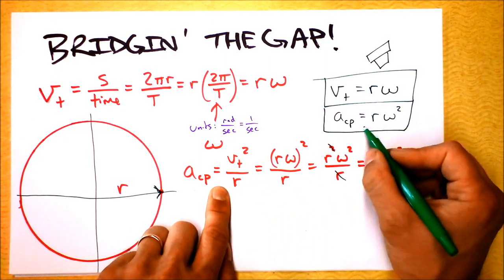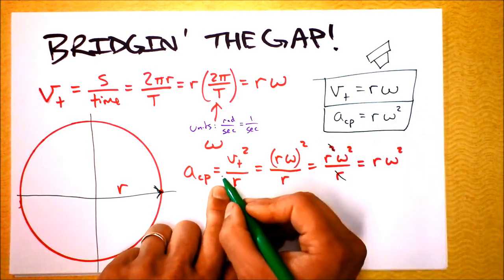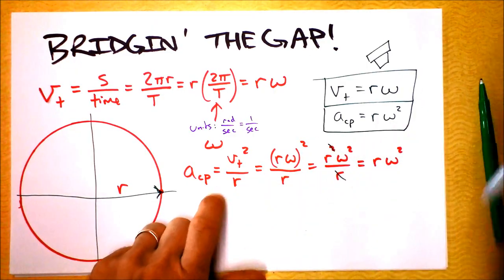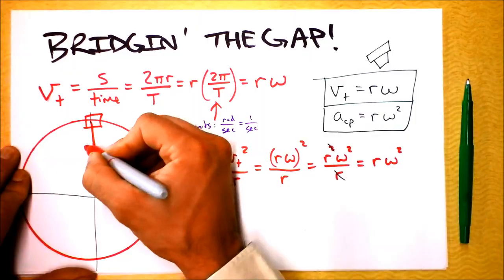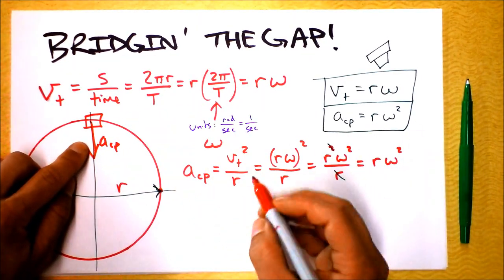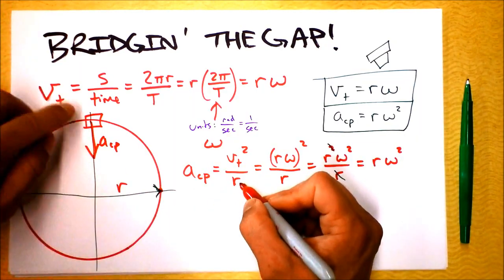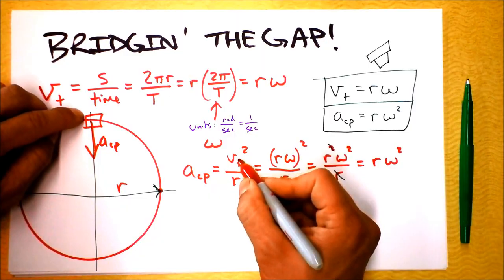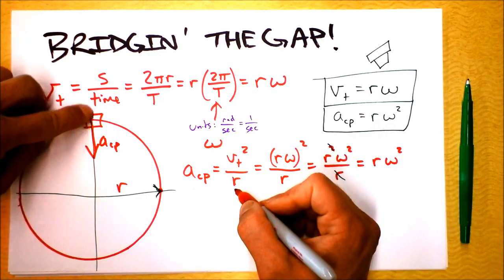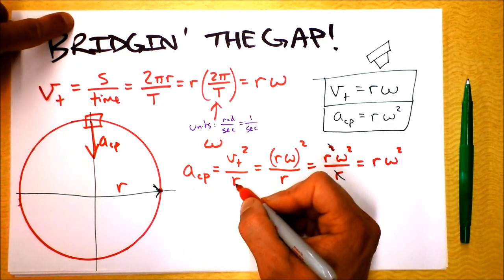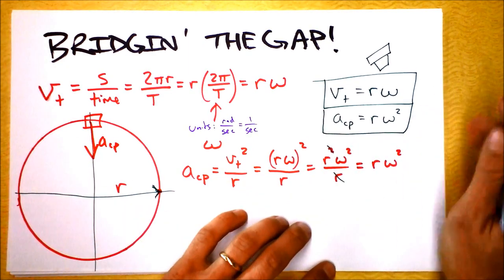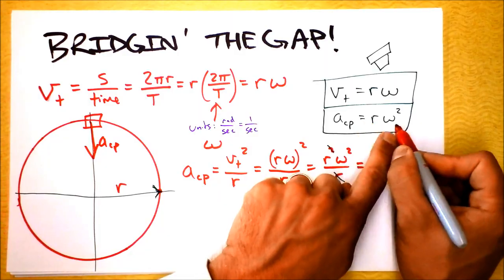This equation seems to show the opposite dependence on r compared to a_CP = v_T²/r. Let's make sense of that. In the equation a_CP = v_T²/r, the acceleration toward the center gets smaller as radius gets bigger — but that's assuming tangential speed stays constant. If tangential speed is fixed and r is larger, you need less centripetal acceleration.